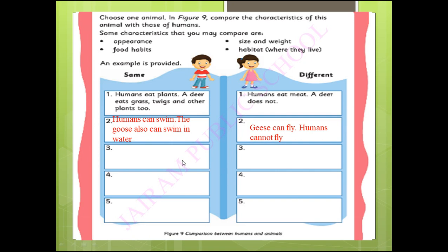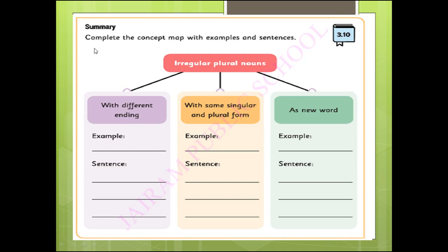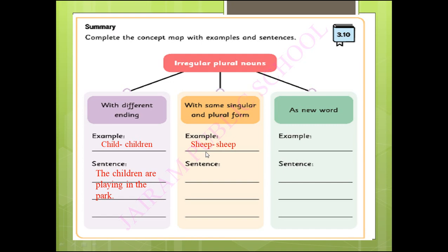Do this at home and write the answers in your studio. Now complete the concept map with examples and sentences for irregular plural nouns. With a different ending: child → children — 'The children are playing in the park.' Same singular and plural form: sheep — 'The sheep are grazing in the field.' New word entirely: person → people — 'Many people are waiting at the bus stop.' Write the answers in your studio.